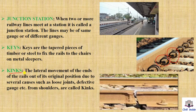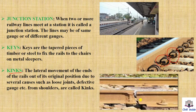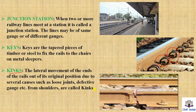Kinks. The lateral movement of the ends of rails out of their original position due to swelling causes such as loose joints or defective gauge, spreading from the shoulders, is called kinks. Where there are cracks or loose joints, the rail ends shift laterally — that is called a kink.